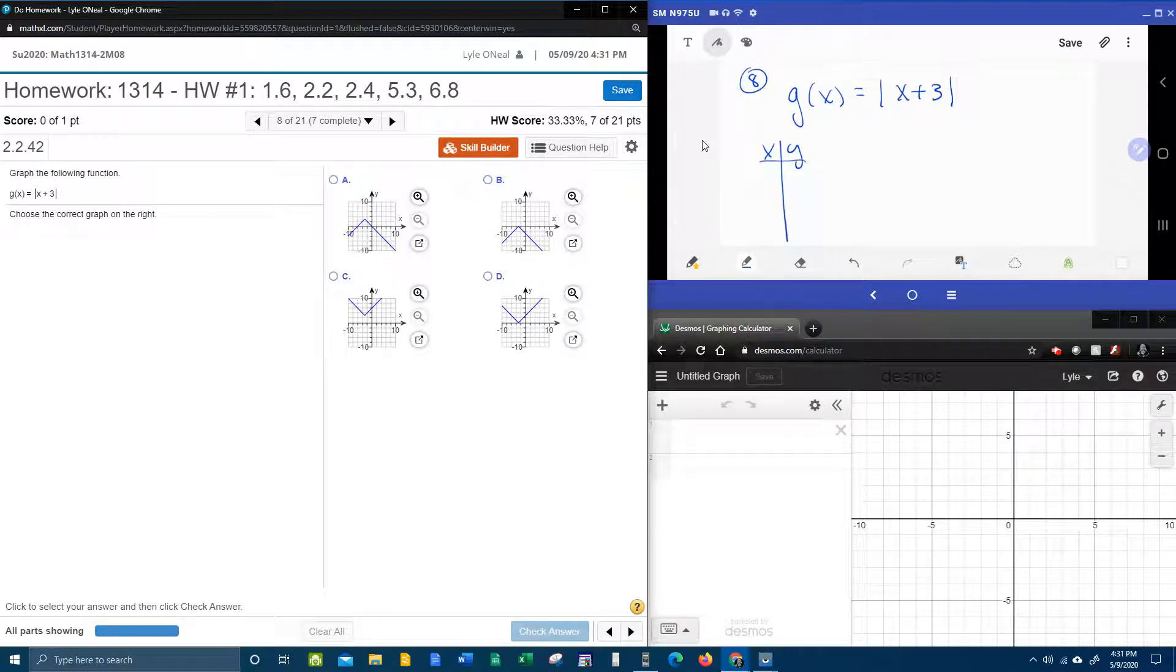And just to give you a little secret about making this easy on yourself, the first X that you want to pick needs to be a number that will make this zero. That's what I call the critical point. It'll produce the vertex of the V.